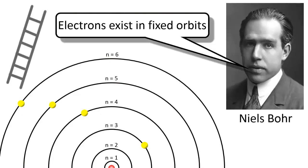It's sort of like a ladder. Just as your feet can only stand on the rungs of a ladder but not in between, electrons can exist only in these orbits, but not in between them.